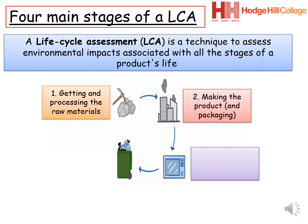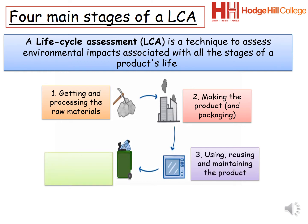Our second stage involves making the product and packaging it. Our third stage is using, reusing, and maintaining the product. The impact of a product on the environment due to its use depends on the type of product. For example, a wooden chair has very little impact unless it needs cleaning or repair, while a car uses a lot of fuel and will have significant impact on the environment.